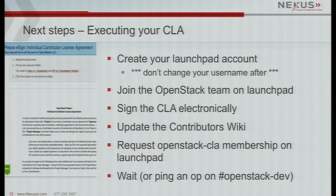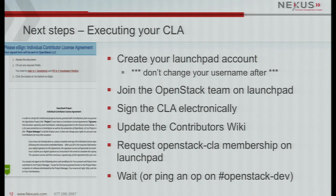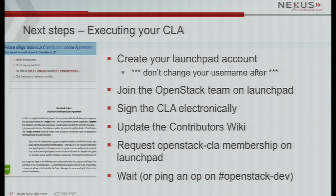Who hasn't executed a CLA already? Contributors license agreement - pay close attention, because this tripped me up. First, you've got to create a Launchpad account - it's basically an open ID platform that is really important to your contributions. You'll get notifications of projects people are working on; it's closely integrated with the review process. If you like everything to say your name so everyone can find you publicly, you may go in and change your username. Don't do that - I had code stuck in a queue for a month because of it. Join the OpenStack team on Launchpad, sign the CLA electronically, get a serial number, update the wiki, and request OpenStack contributors CLA.